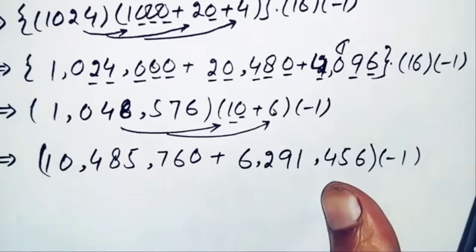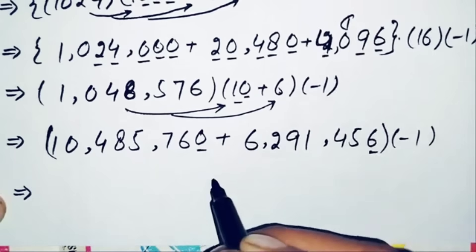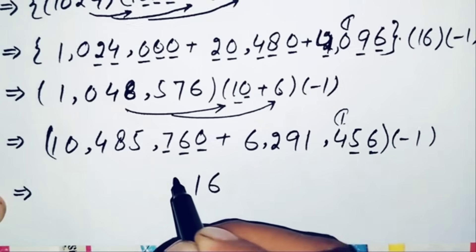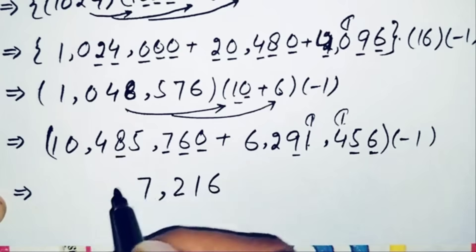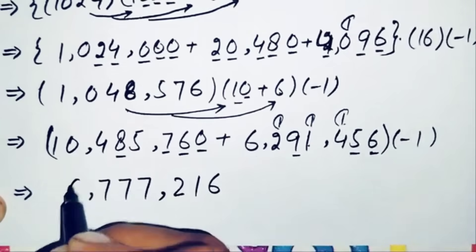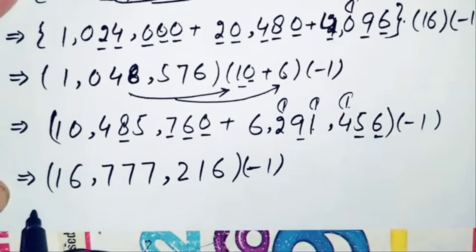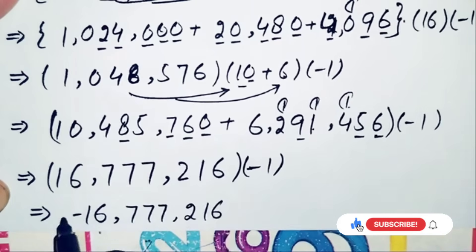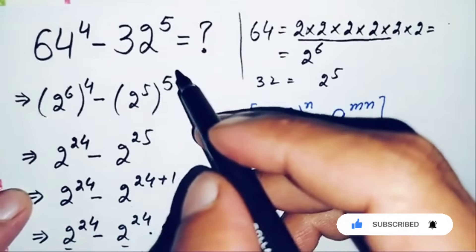Adding the two partial products and multiplying by negative 1, our final answer becomes negative 16,777,216. So the value of this nice and interesting simplification math problem, 64^4 minus 32^5, is negative 16,777,216.